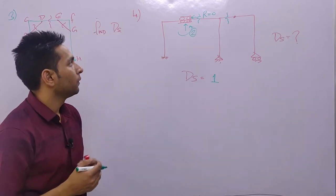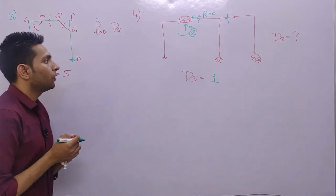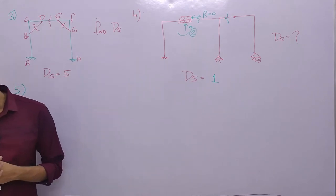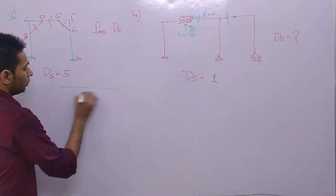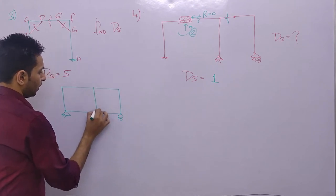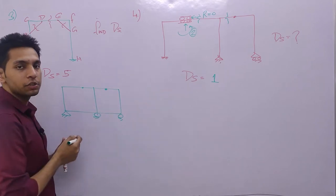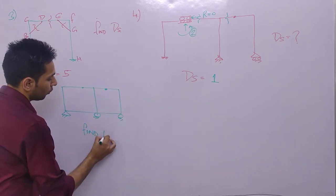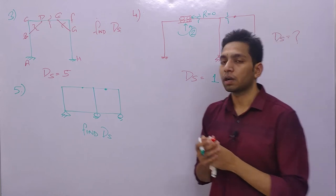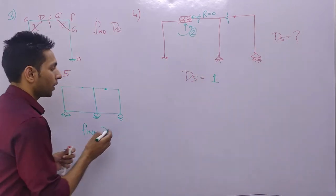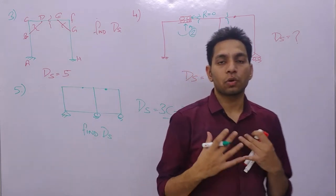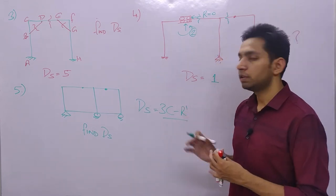The fifth question gives a frame with a hinge, and you have to find the degree of static indeterminacy. You can solve it by applying cuts, or directly using the formula: ds = 3c − r', where c is the number of cuts required to open the structure.